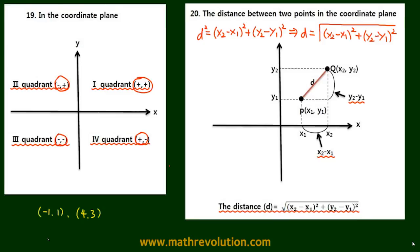Then the distance between these two points will be the square root of x2 minus x1, so minus 1 minus 4 squared, plus 1 minus 3 squared. So this is the square root of, this is 5, so 25 plus 4. So we get the square root of 29.